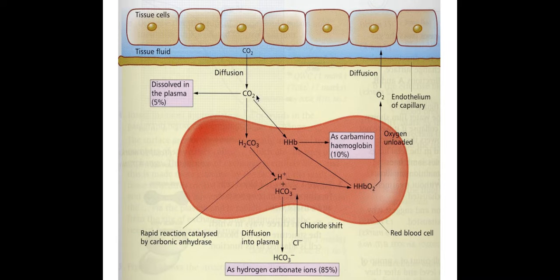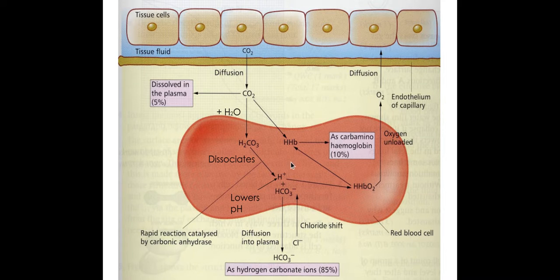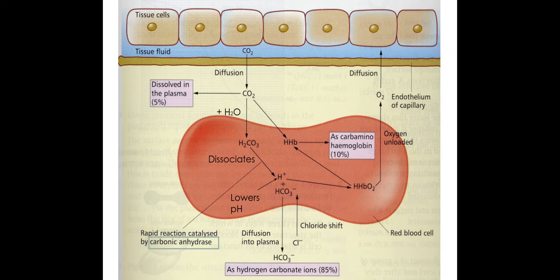Carbon dioxide diffuses into the red blood cell, or erythrocyte, and combines with water to form carbonic acid. This carbonic acid then dissociates into hydrogen ions and hydrocarbonate ions. These hydrogen ions lower the pH of the blood, so in order to act as a buffer, haemoglobin will bind to the hydrogen ions to form haemoglobinic acid. Carbaminohaemoglobin is where carbon dioxide binds directly to haemoglobin. The hydrocarbonate ions then move out of the cell into the surrounding plasma, and the chloride shift occurs — chloride ions move back in to balance that movement of ions.